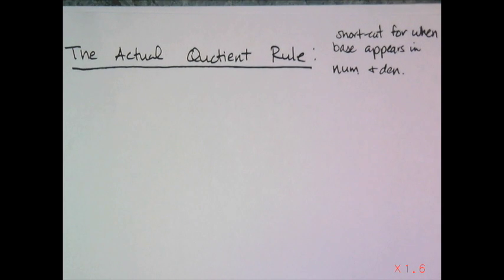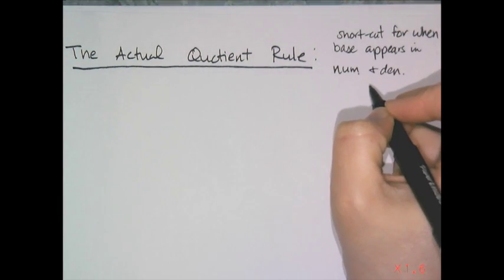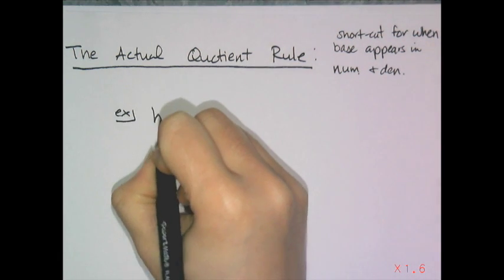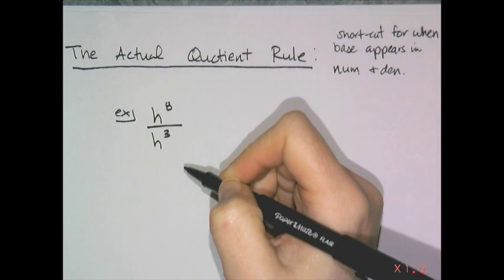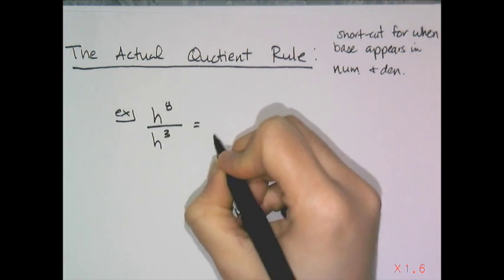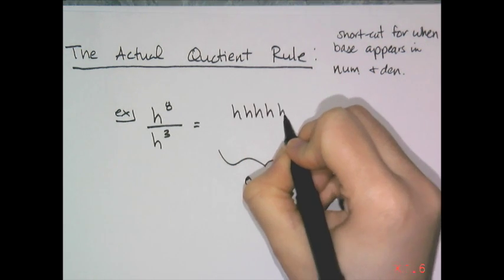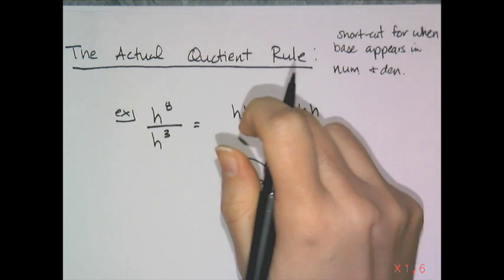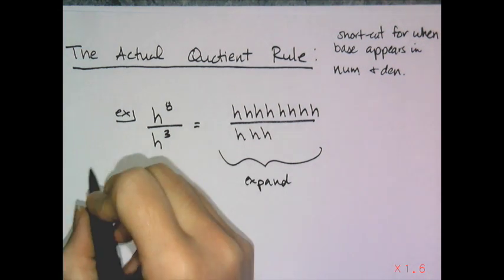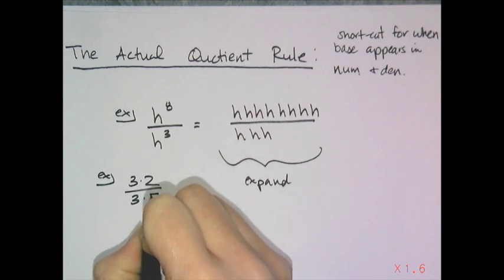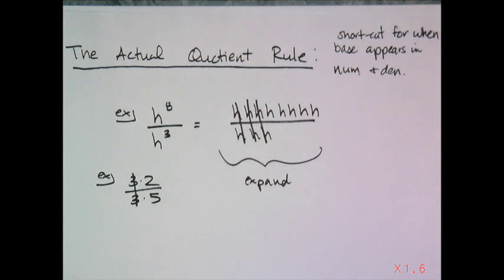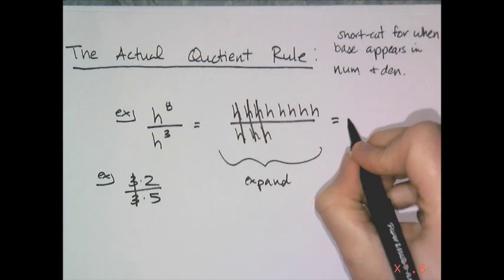Now let's look at the actual quotient rule, which is a shortcut for when the same base appears in both the numerator and denominator. To simplify h to the 8th over h cubed by definition, expand: eight h's on top divided by three h's on the bottom. Cancel matching h's, and you're left with five h's — h to the 5th. The shortcut: I took 8 and subtracted 3 to get 5. The quotient rule says subtract the exponents.